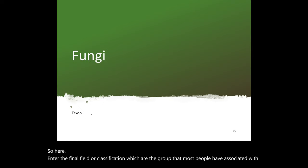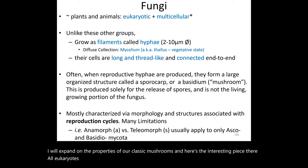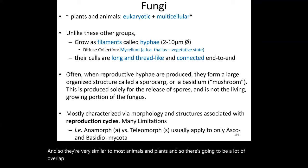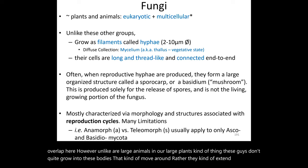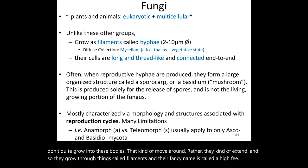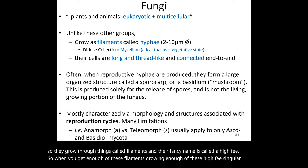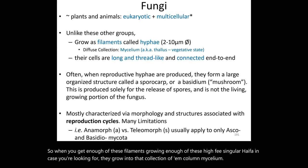We now enter the final classification group — fungi — what most people associate with mushrooms. All fungi are eukaryotes and mostly multicellular, with one small exception. They're very similar to animals and plants with significant overlap. Unlike large animals and plants, fungi don't develop mobile bodies; instead, they grow through structures called filaments or hyphae. When enough hyphae accumulate, they form a collection called a mycelium.